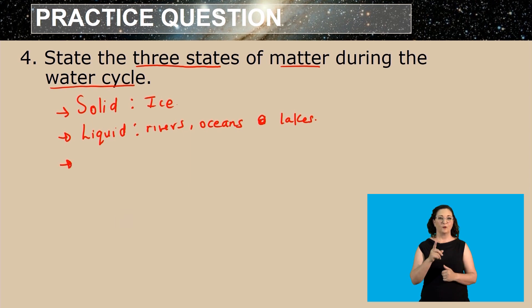So what other state of matter is there? The last one is the gas state. The gas state of water, we find it in water vapor. Remember, when do we get water vapor? During evaporation in the process of the water cycle.